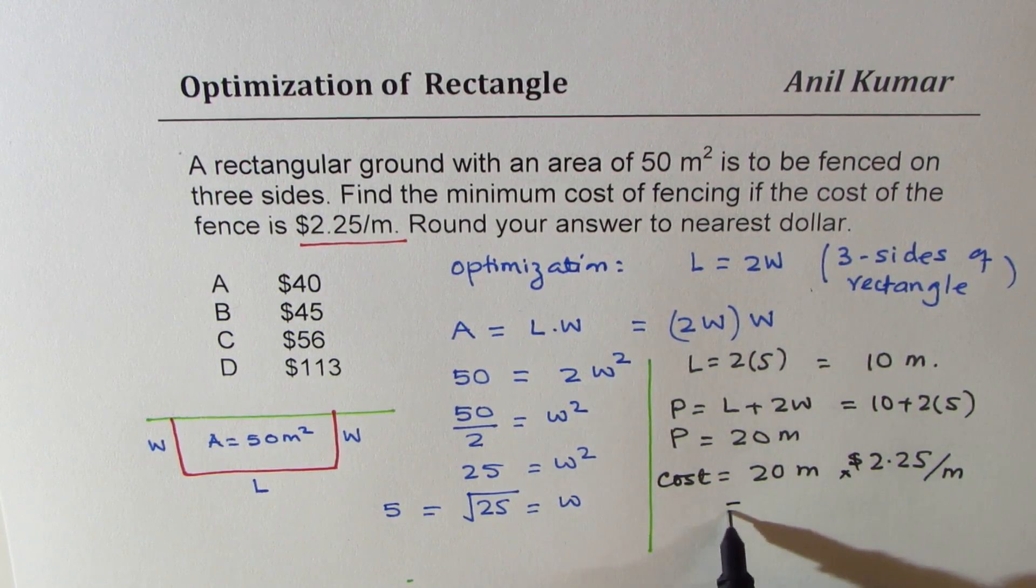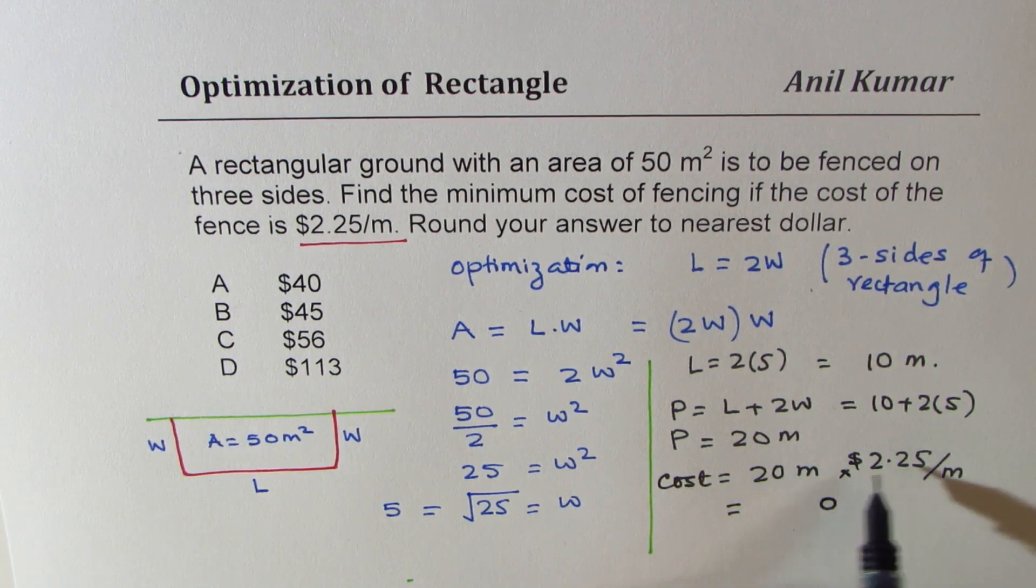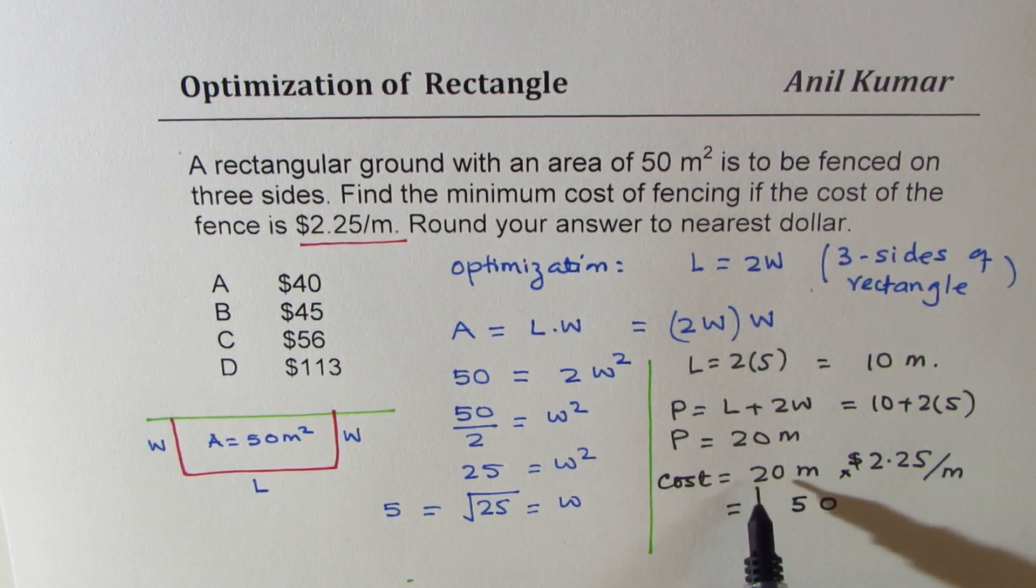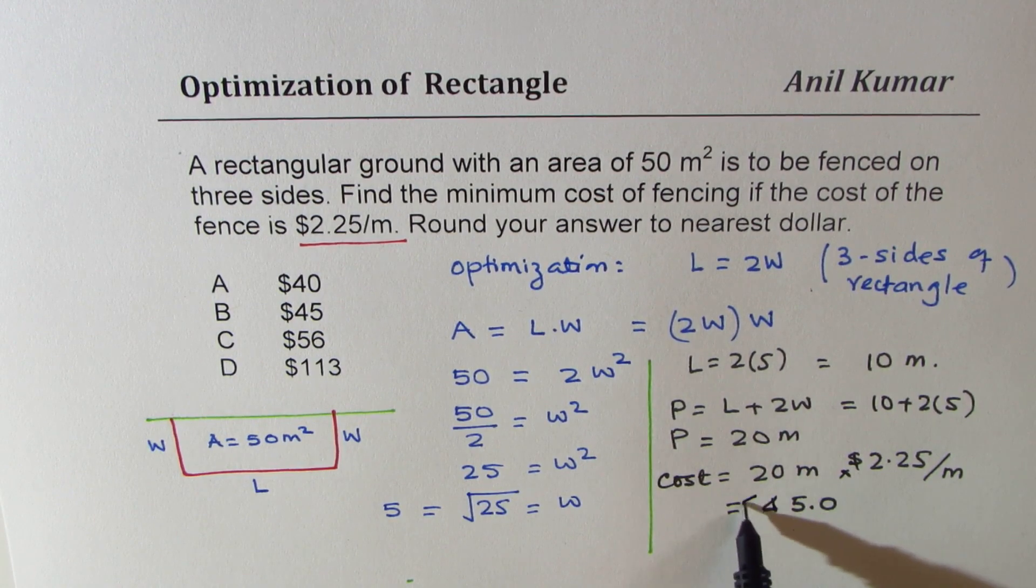So when you multiply, you get 2 times 5 is 10, 2 times 2, 4 and 1, 5. 2 times 2 is 4. So you get 45 points, two decimals, one goes with this. So we get $45.